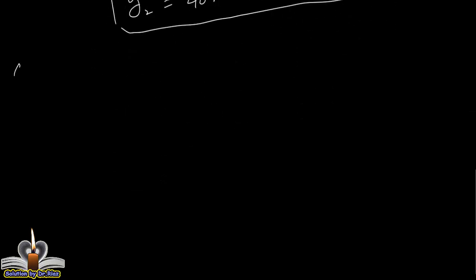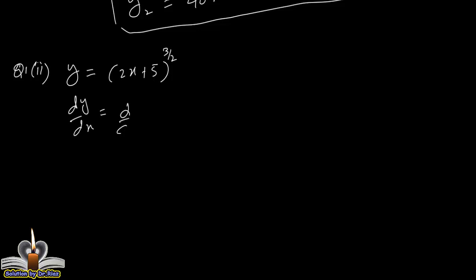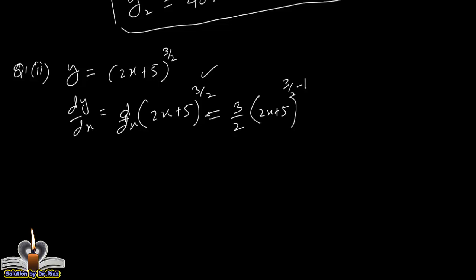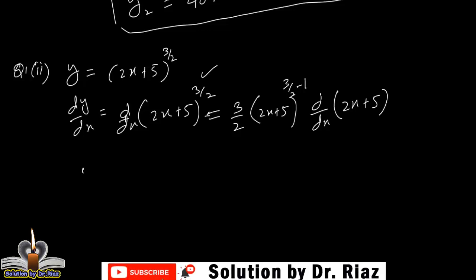Now question number 1, second part. y is equal to (2x + 5) whole power 3/2. تو differentiate with respect to x۔ dy/dx میں power rule apply ہوگا: bracket کی اوپر 3/2 power ہے، تو یہ شروع میں آئے گا، (2x+5) کی power 3/2 - 1 ہوگی، اور further derivative of the base بھی لیں گے۔